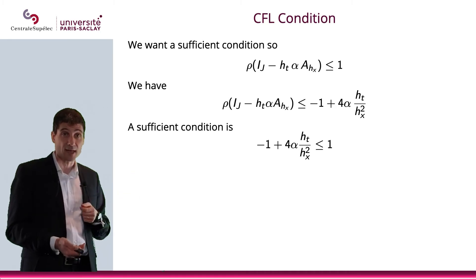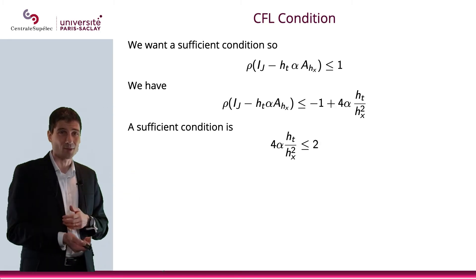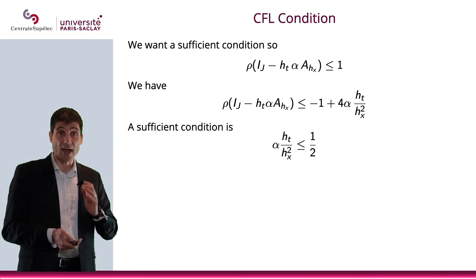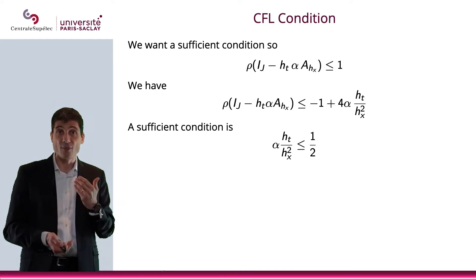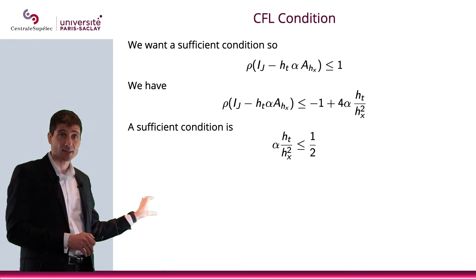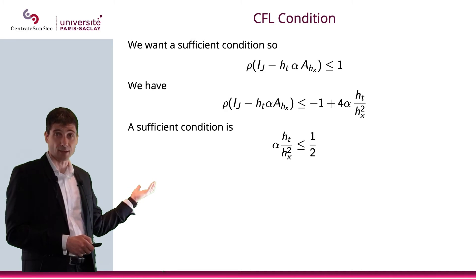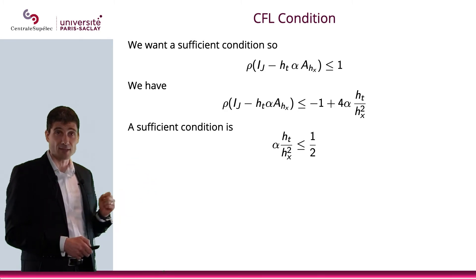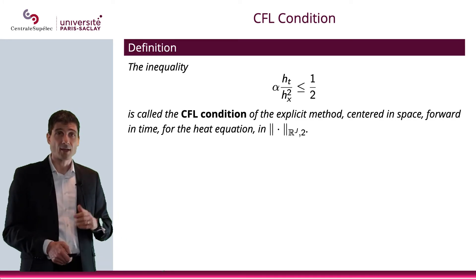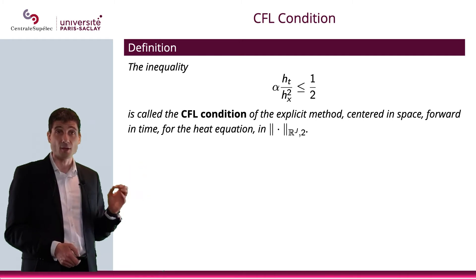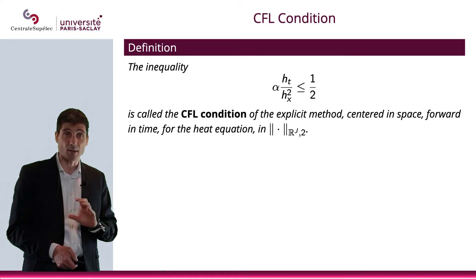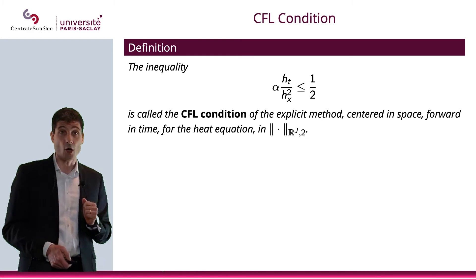So moving -1 to the other side gives 2, and the sufficient condition becomes: α·h_t / h_x² < 1/2. If this condition is met, then we have stability. The title of this slide is the CFL condition — this inequality will be called the CFL condition of the explicit method, centered in space, forward in time, for the heat equation in the norm R^J_2.